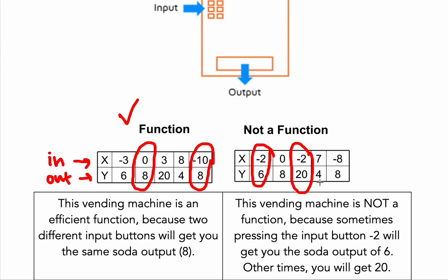This vending machine is no good. It's not a function because it's not predictable. Sometimes when I press the negative 2 button, I get a 6. Other times when I press the negative 2 button, I get a 20. Well, what if I didn't want that? It's very unpredictable. It's not reliable. This is not a function. So you can't have different outputs for the same input. It has to just have one single output. It's got to be functional, reliable.